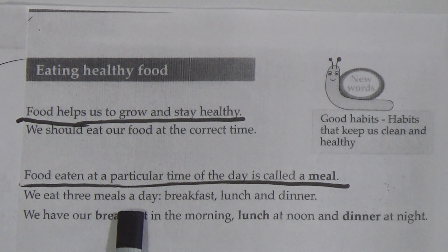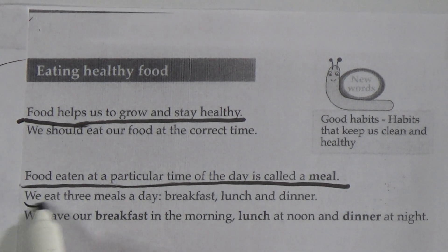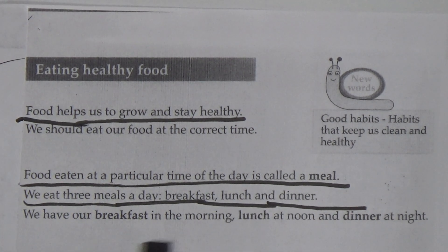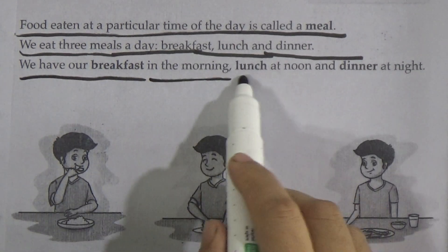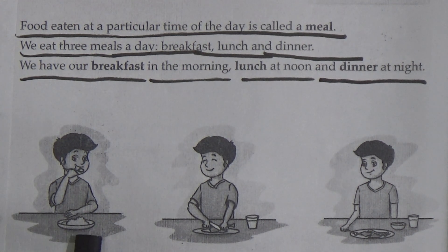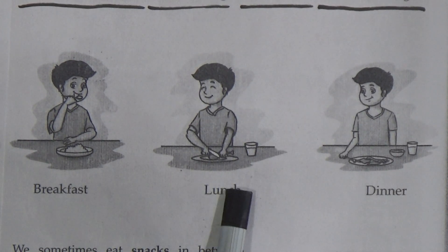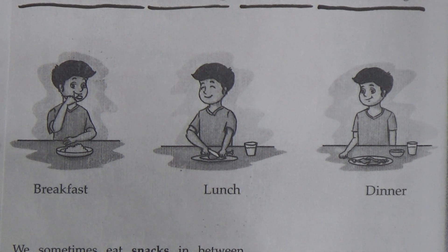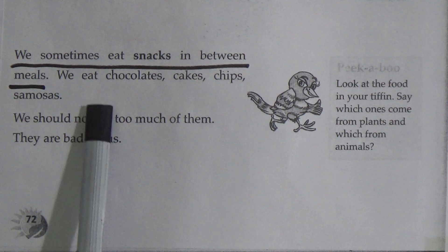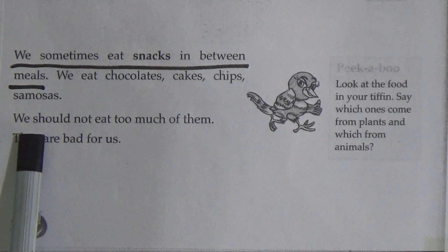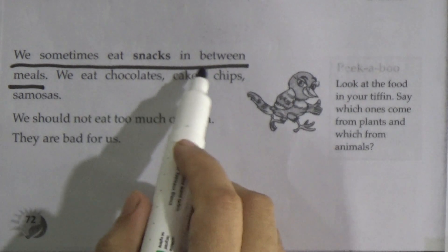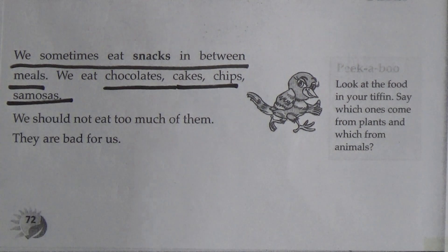We eat three meals a day: breakfast, lunch, and dinner. We have our breakfast in the morning, lunch at noon, and dinner at night. We sometimes eat snacks in between meals — chocolates, cakes, chips, samosas. We should not eat too much of them; they are bad for us.